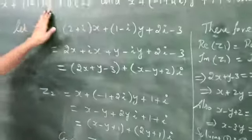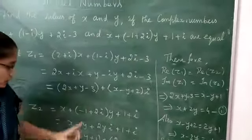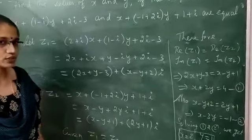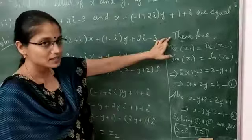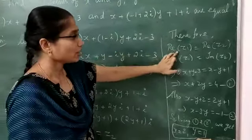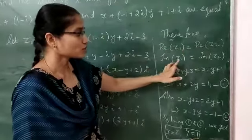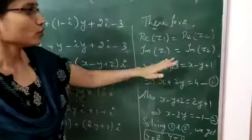It is given that both numbers are equal, that is z1 equals z2. We know that if two complex numbers are equal, then their real parts are equal and imaginary parts are also equal. Using this,